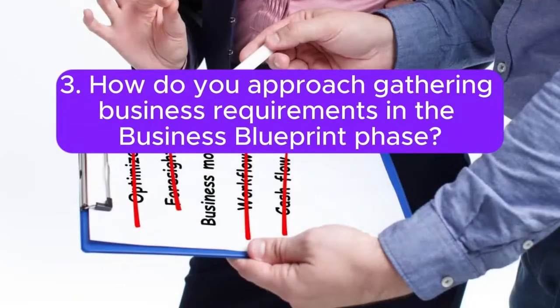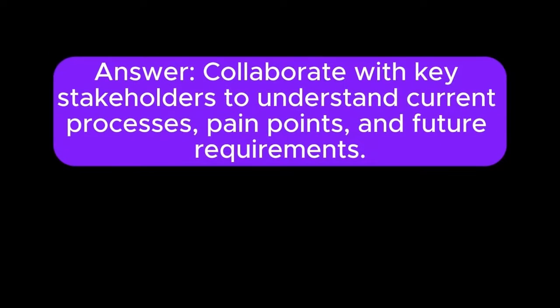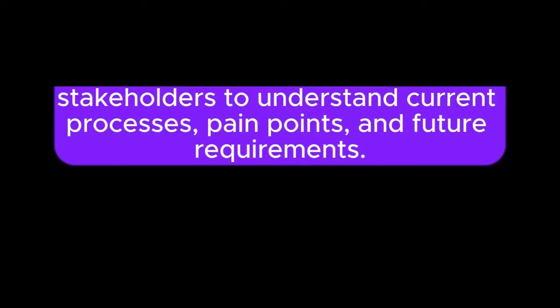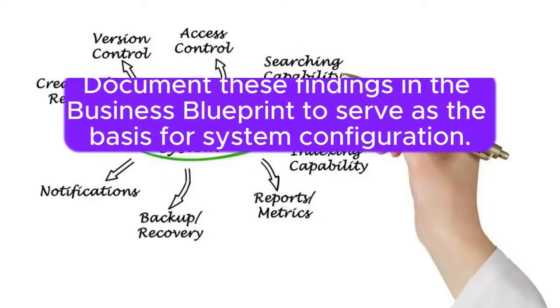Question 3: How do you approach gathering business requirements in the business blueprint phase? Answer: Collaborate with key stakeholders to understand current processes, pain points, and future requirements. Document these findings in the business blueprint to serve as the basis for system configuration.